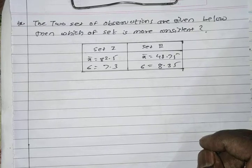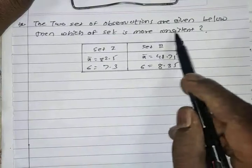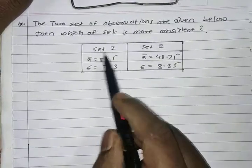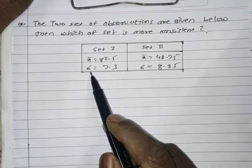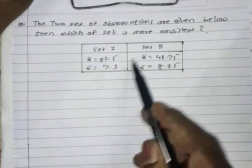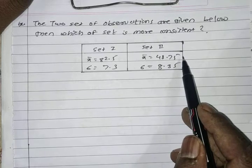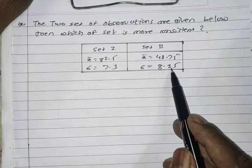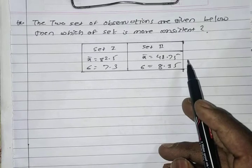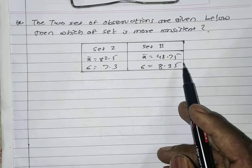The question is: two sets of observations are given below — which set is more consistent? Set 1 has mean equal to 82.5 and standard deviation equal to 7.3. Set 2 has mean equal to 48.75 and standard deviation equal to 8.35.